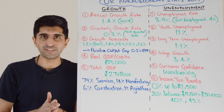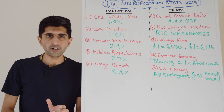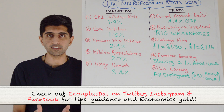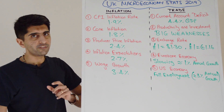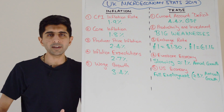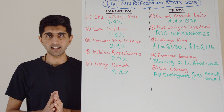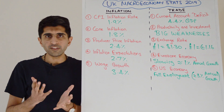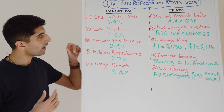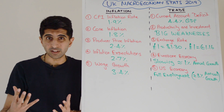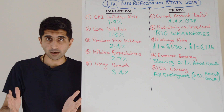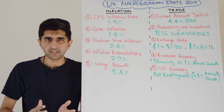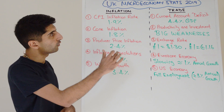UK CPI inflation stands at 1.9%, very close to the 2% target, and expectations are for around 2% as the year progresses. Core inflation — Mark Carney's preferred measure — strips out volatile prices from the CPI basket: fuel, gas and electricity, food, and clothing. That stands at 1.8%, very much matching CPI, which tells you those volatile prices are not distorting the final rate.